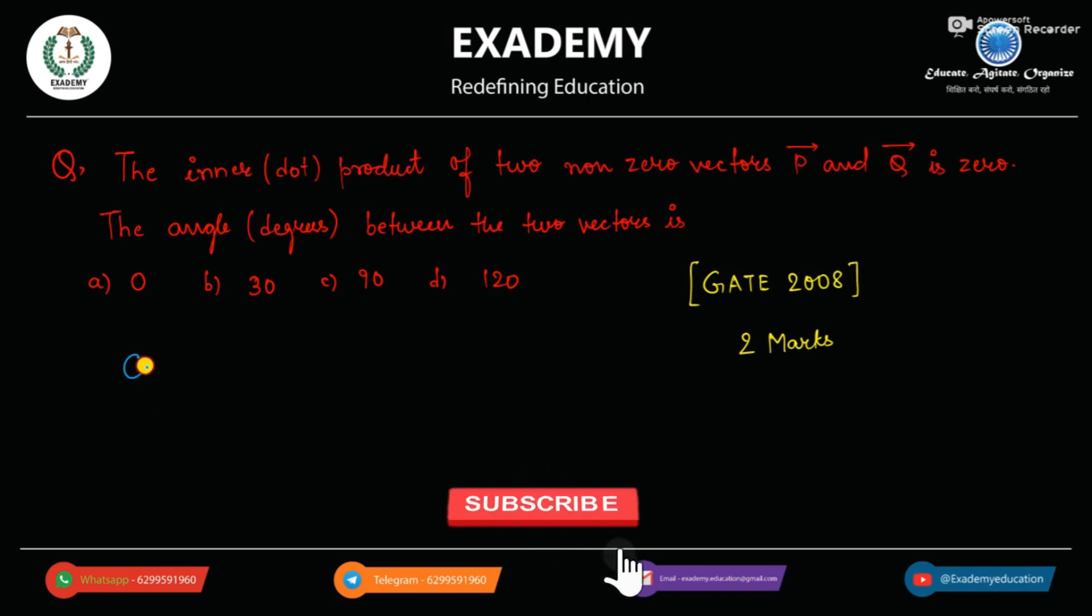We know that if there are two vectors, then what do we do? We know that a-vector dot b-vector is mod of a-vector, mod of b-vector into cos theta.